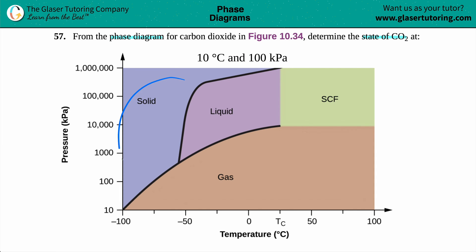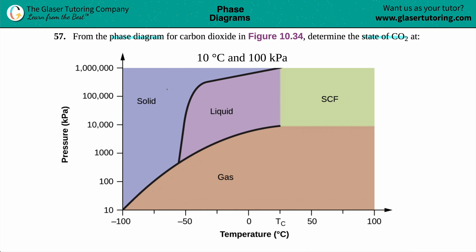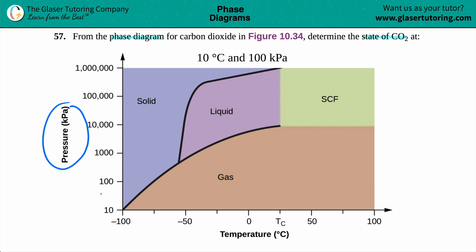So this diagram may look a little scary, but it is nothing more than a simple x and y graph. We have an x-axis, which is temperature in degrees Celsius, and a y-axis of pressure in kilopascals. And how convenient — they gave us a degrees Celsius value and a kilopascal value.